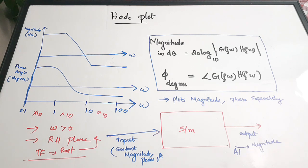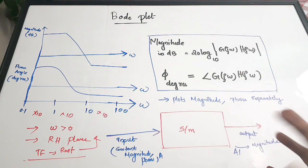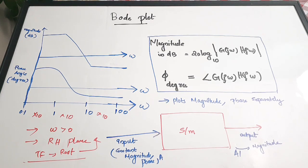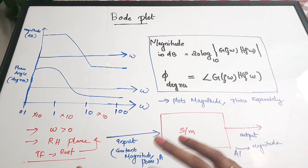Next we are going to see the steps generally used for plotting a bode plot. We have to follow certain steps to take the transfer function, convert it to another form, and make it in a graphical format. In the next video we will see the detailed procedure; in this video we will just explain what the basic steps are.